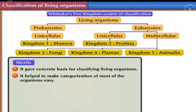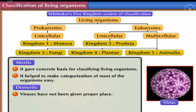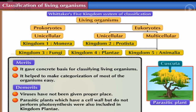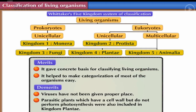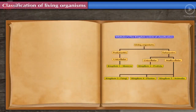However, despite these merits, Whittaker's system also had some demerits. The major demerit is that viruses have not been given a proper place in this system. Additionally, parasitic plants which have a cell wall but do not perform photosynthesis were also included in Kingdom Plantae. Despite the demerits, Whittaker's five kingdom system is still widely accepted for the study and classification of living organisms.